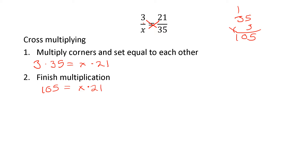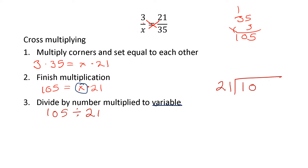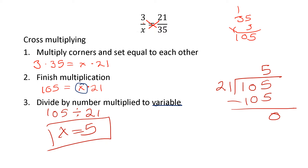This should look familiar — like the end of the last homework assignment with a missing factor. Our last step is to divide by the number multiplied to the variable. The variable here refers to our missing number, so x is our mystery number. We divide 105 by 21. 21 goes into 105 five times — 5 times 1 is 5, 5 times 2 is 10 — so x equals 5.